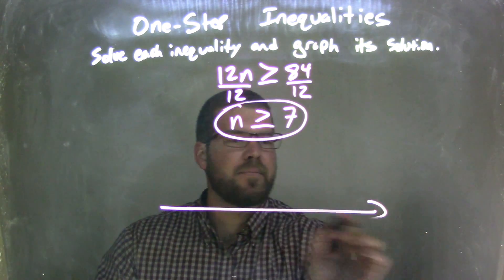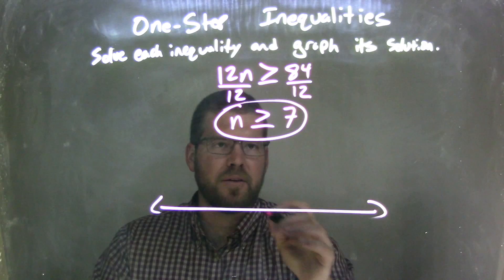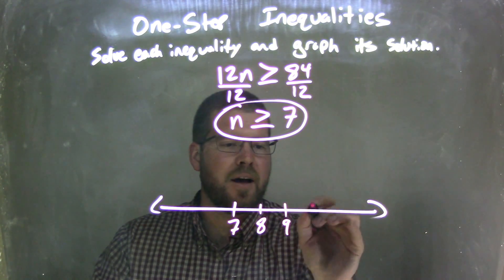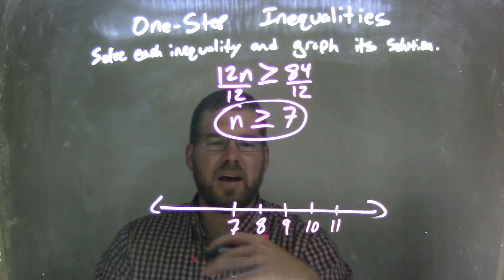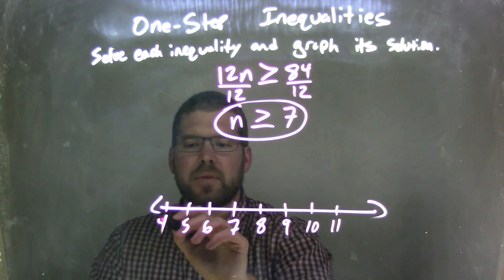So now I need to graph it. So I'll make a number line here, and I'll put 7 right there. And go by 1 to 8, 9, 10, 11. I have some freedom here with it, 6, 5, and 4.